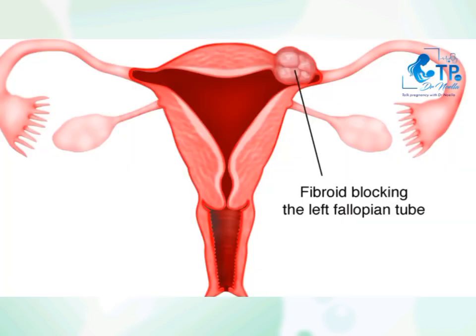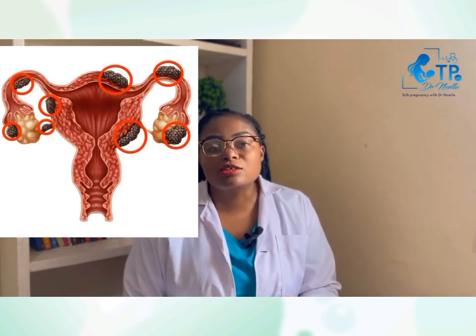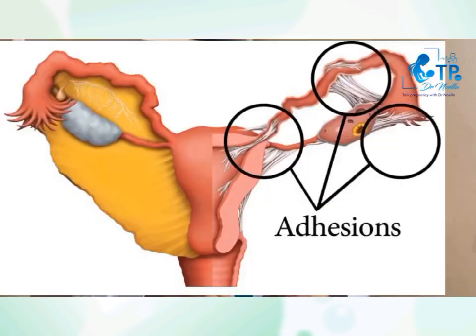Other methods include ultrasound scans, which can detect a fibroid that is large and around the tubes blocking them, or endometriosis — swellings of the womb that have extended to the level of the tubes. We also have exploratory laparoscopy surgery and hysteroscopy. With laparoscopy, a small camera is inserted into the abdomen and they may see that the tubes are bent and try to release them. With hysteroscopy, the camera is sent from the vagina into the womb, using fluid to open the womb and visualize the area.